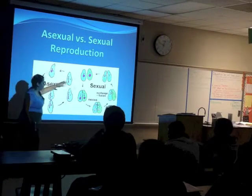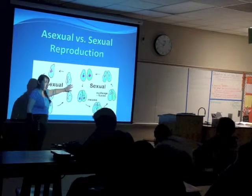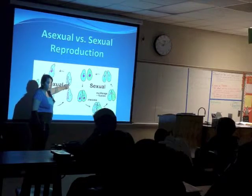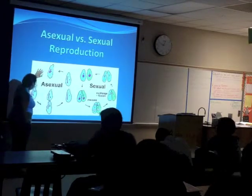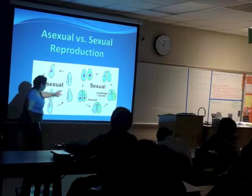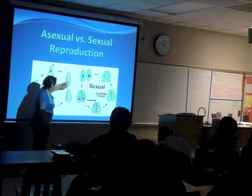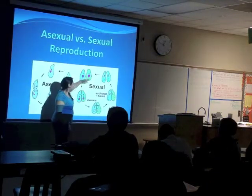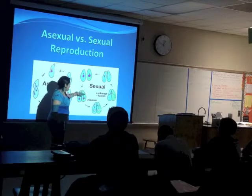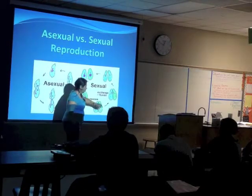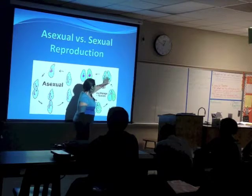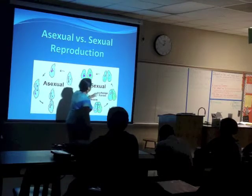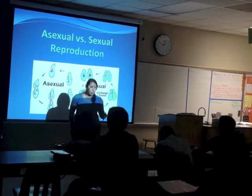In asexual reproduction, you start off with one cell and you end up with two, but the two look exactly the same as the first one. So I started with one, it starts splitting in half, completely split in half, and these two end up being exactly the same. In sexual reproduction, you have two cells, they fuse together and have an exchange of DNA, and you end up with another cell — but the cell you end up with is very different from the two you started with.